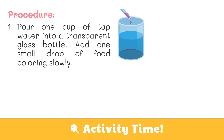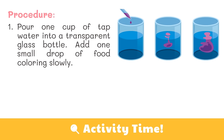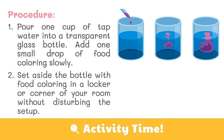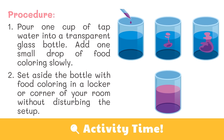Let's continue with another activity. Pour 1 cup of tap water into a transparent glass bottle. Add 1 small drop of food coloring slowly. You may observe that the food coloring starts to spread to the other parts of the water. Set aside the bottle in a locker or corner of your room without disturbing the setup. After one day, what happens to the food coloring dropped in the bottle containing water? Thinking about food coloring and water as made up of particles, you may observe that the food coloring is evenly scattered all throughout the water.